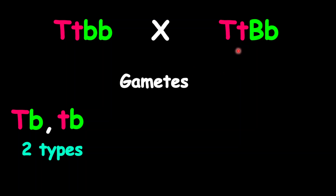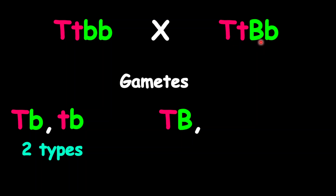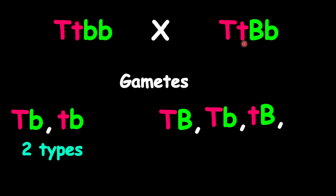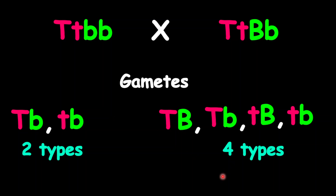For the next parent, based on our previous example, since both traits are heterozygous, we're going to have four possibilities. The first one is uppercase T with uppercase B, then uppercase T with lowercase B, then lowercase T with uppercase B, and the last one is lowercase T with lowercase B. So this is four types of gametes. In terms of our Punnett Square size, this is two by four, so we should have eight boxes.